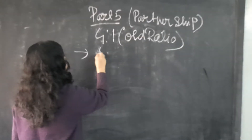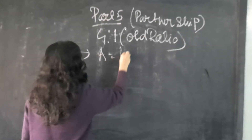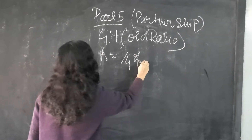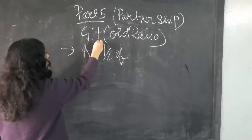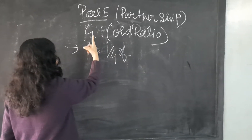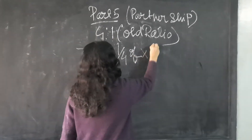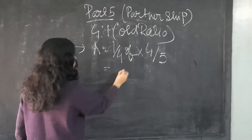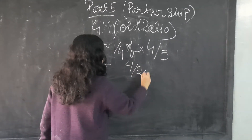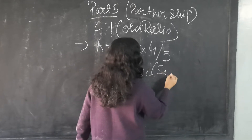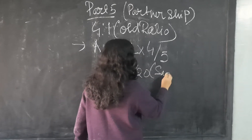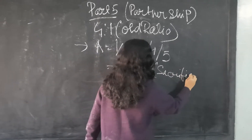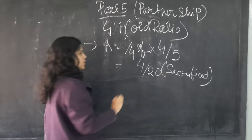A surrenders 1/4 of his share. How much does A surrender? 1/4 of his share means 1/4 of his share, which is 4/5. So how much does A sacrifice? A has sacrificed 4/20.